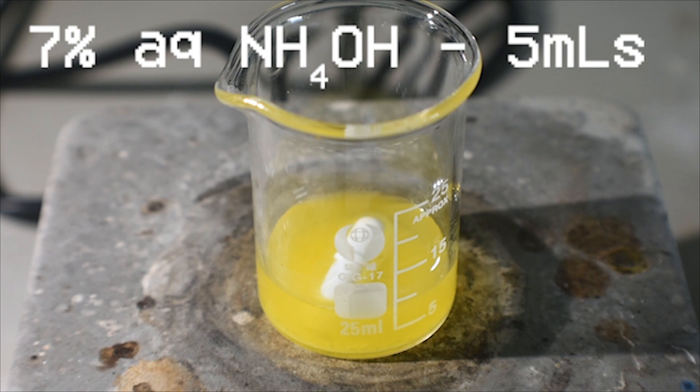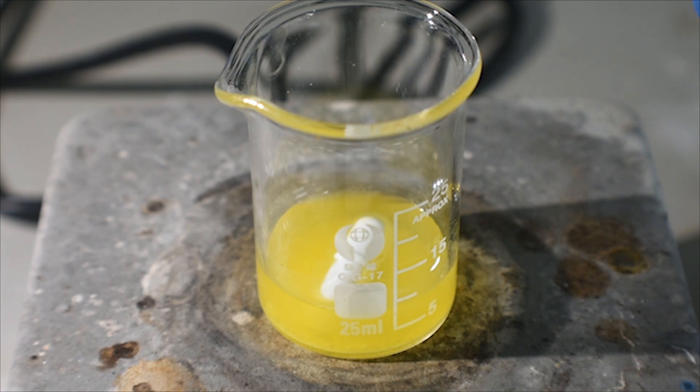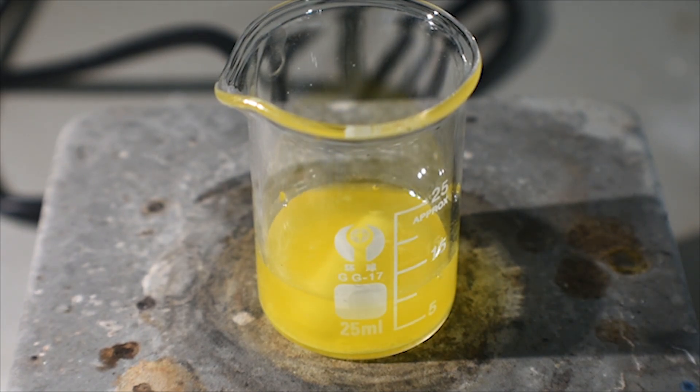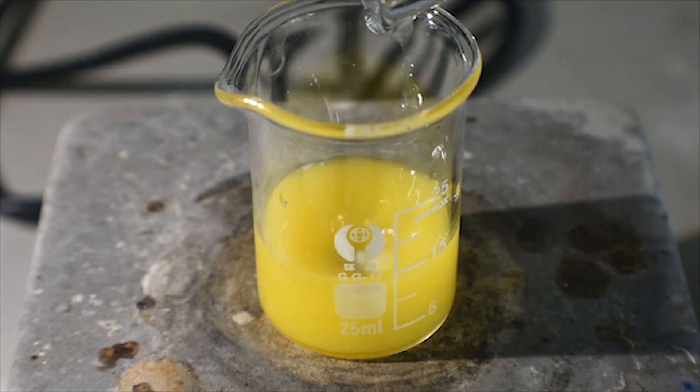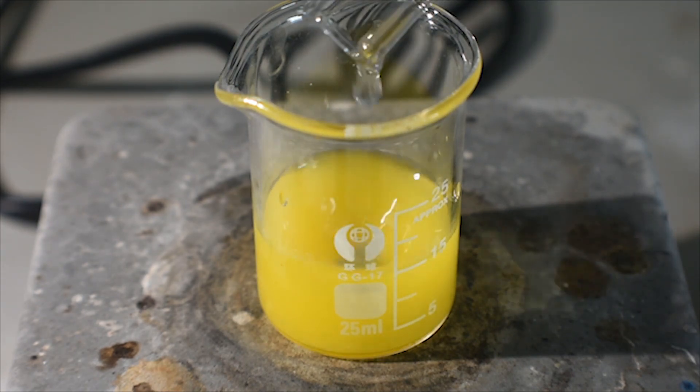5 ml of 7% aqueous ammonia is added. Stirring is turned on. And shortly, we should see the formation of a bright yellow powder. You may be able to see some of that forming right now.